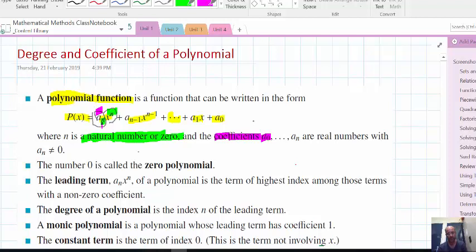So you can have numbers, positive, negative, fractional. It's got to be from the real number set, which is pretty much everything that we look at in math methods.